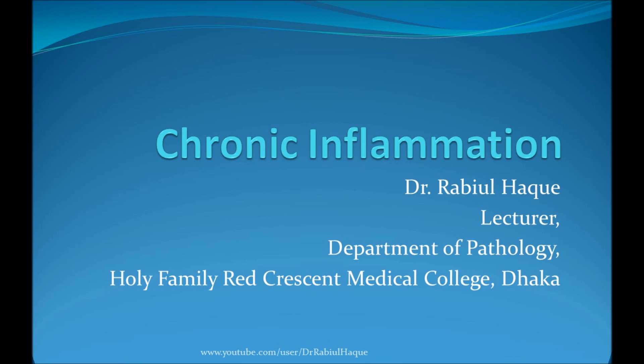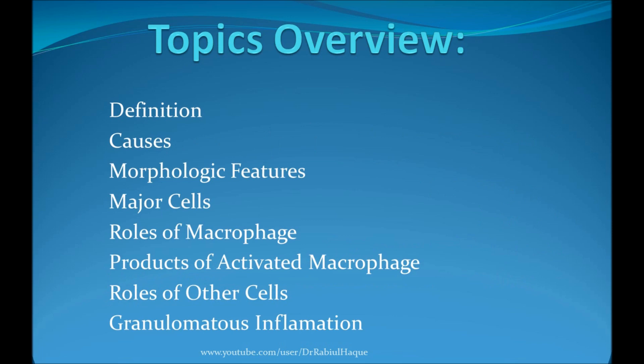Today's topic is inflammation part 3, where we will talk about chronic inflammation. This video will contain the definition of chronic inflammation, the common causes, its morphologic features, major cells involved, and since macrophages are the dominant cell type we will talk in detail about the role of macrophages, how they become activated, and the products of activated macrophages. Then we will discuss briefly the roles of other cells and finish with granulomatous inflammation. So, a lot of topics — let's begin.